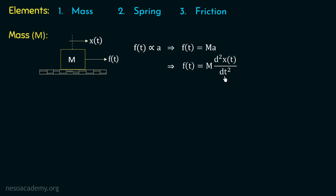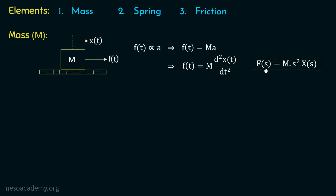We have replaced the acceleration with the double derivative of displacement with respect to time. Now if we apply Laplace transform on both sides, we get f of s equal to m multiplied with s squared x of s, where x of s is the Laplace transform of x of t and f of s is the Laplace transform of f of t. This is the force equation for a mass undergoing displacement x of t.